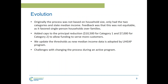Our incentives evolved over time. When we originally launched, eligibility was not based on household size — just two categories of state median income. Feedback showed this favored single-person households over families. Obviously, a single person making $100,000 has a different ability to pay than a five-person household making $100,000. So we moved to a household size-based model and also added caps to the incentives — capping the 30% or 20% incentive at $10,500 or $7,000 for the various categories — to serve more customers with that funding.